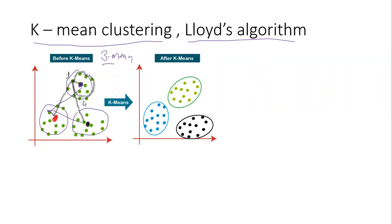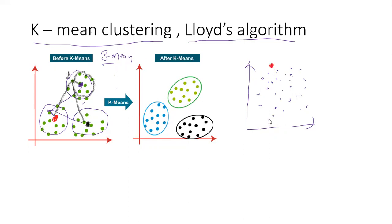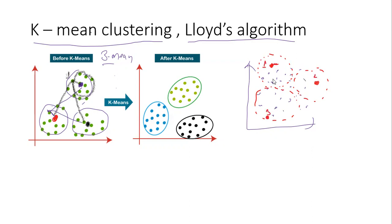That was an easy set of data points to illustrate the example. But let's say we have a more complex dataset. Also, the choice of centroid points is random — we can take the points anywhere in the whole dataset. So after the first round of clustering, we might end up with a first set, a second set, and a third set. But you can see that these initial points are not truly the centroid of each cluster.